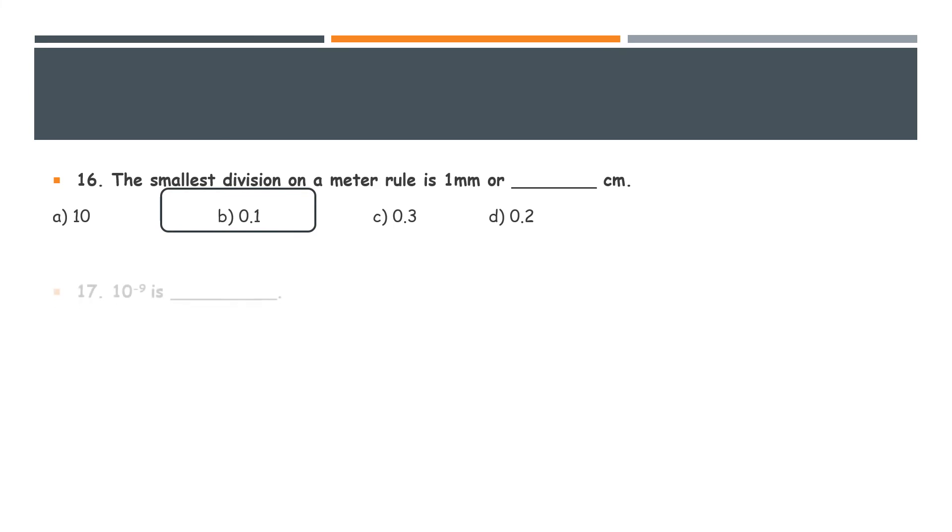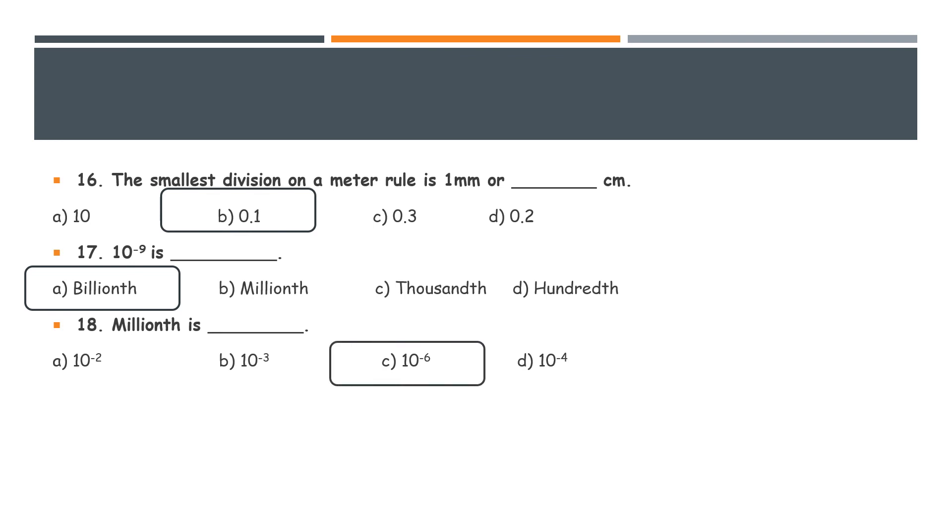Next MCQ is 10 to the power of minus 9 is blank. And here we know that we call this billionth. MCQ number 18, millionth is blank. The options are given. And we know that the right answer is 10 to the power of minus 6.